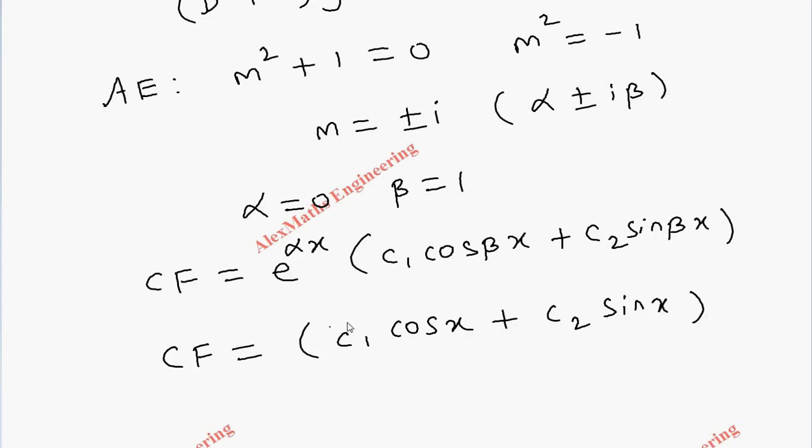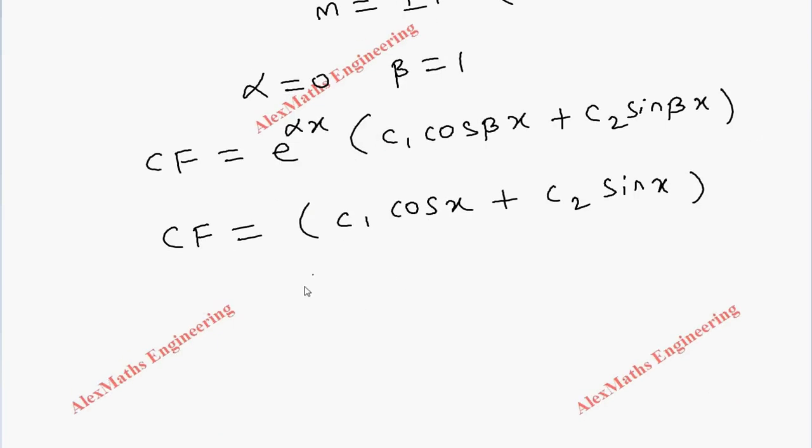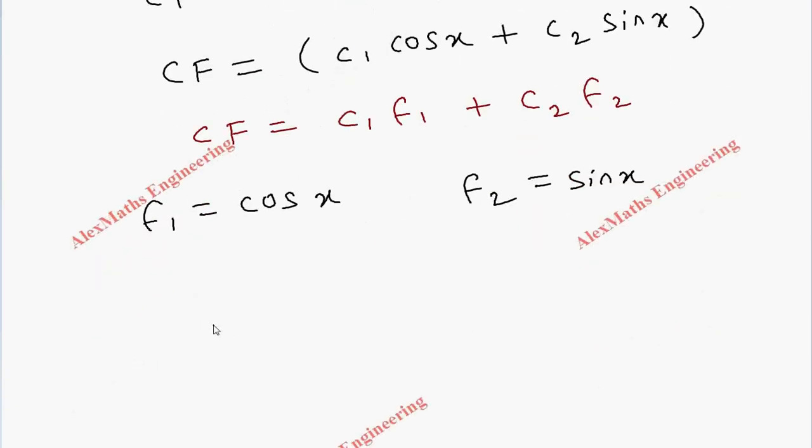We have to compare this to the general form c₁f₁ + c₂f₂. From this we know f₁ is cos x and f₂ is sin x.